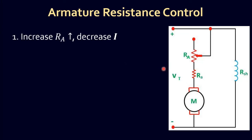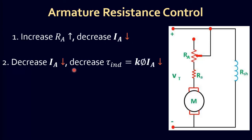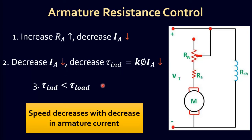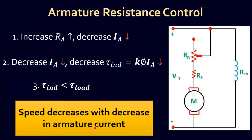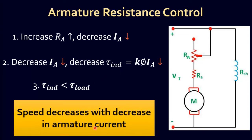As armature resistance RA is increased, armature current IA is decreased. As armature current IA is decreased, induced torque is decreased. As induced torque is less than load torque, the speed of the motor is decreased. In summary, motor speed decreases with a decrease in armature current.